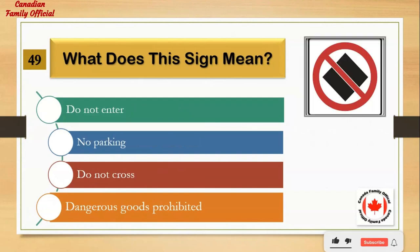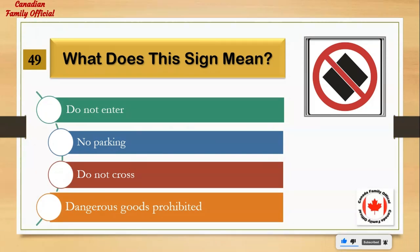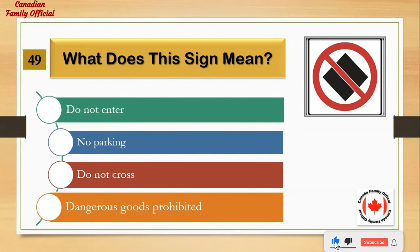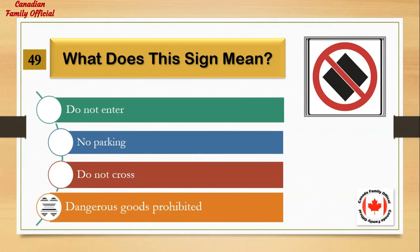What does this sign mean? Number 1: do not enter. Number 2: no parking. Number 3: do not cross. Number 4: dangerous goods prohibited. And the answer is: dangerous goods prohibited.